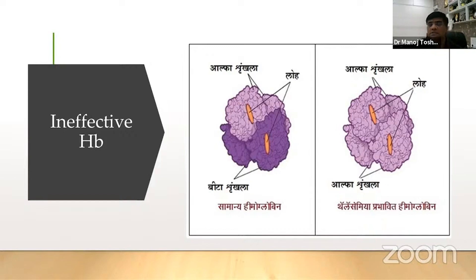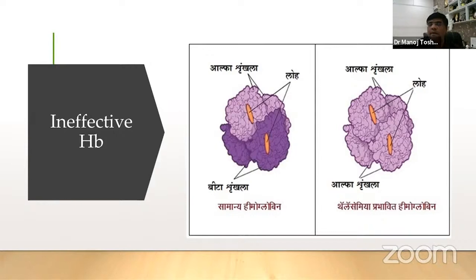But whenever there is thalassemia, the beta chains are reduced. In beta thalassemia, the alpha chains are unmatched and remain inside the bone marrow. If the chains are matched, the RBCs will be completely formed and released into the blood. But if unbalanced, the unmatched alpha chains get deposited, leading to ineffective erythropoiesis and manifestations like anemia, bone disease, bone changes, and stunting of growth.